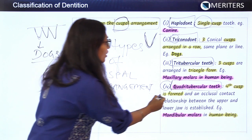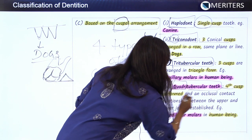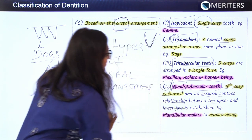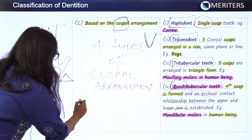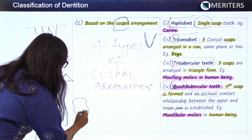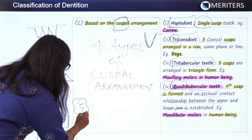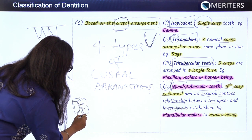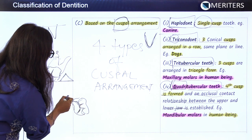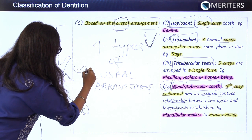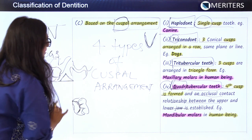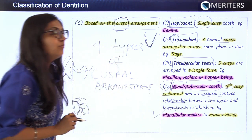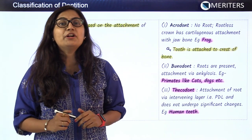The fourth type is quadritubercular teeth — quadri means four. Four cusps are formed and an occlusal contact relationship between the upper and lower jaw is established. The example is the mandibular molar. Looking at it occlusally, we have three buccal cusps and a palatal or lingual cusp — total four cusps arranged to occlude with the opposite arch. Such arrangement is seen in quadritubercular teeth, with mandibular molars as the example.